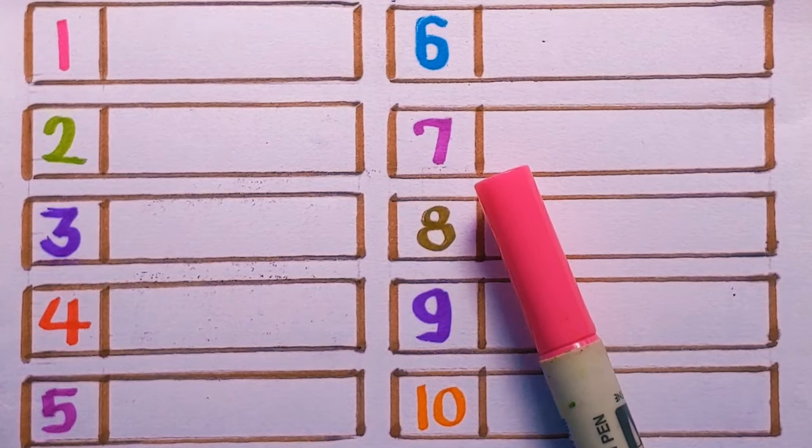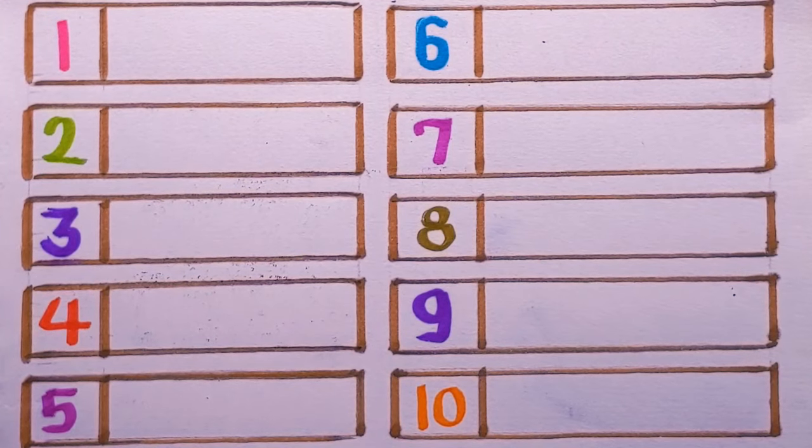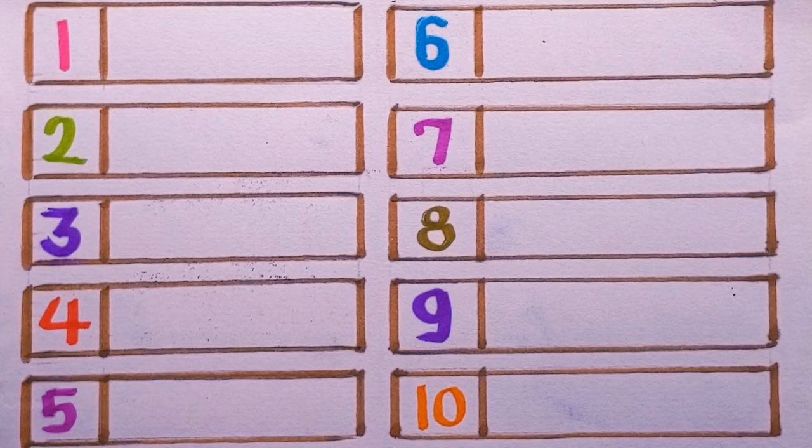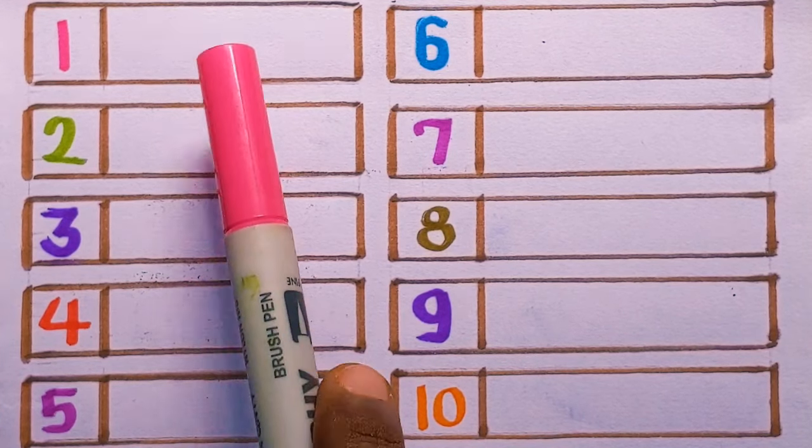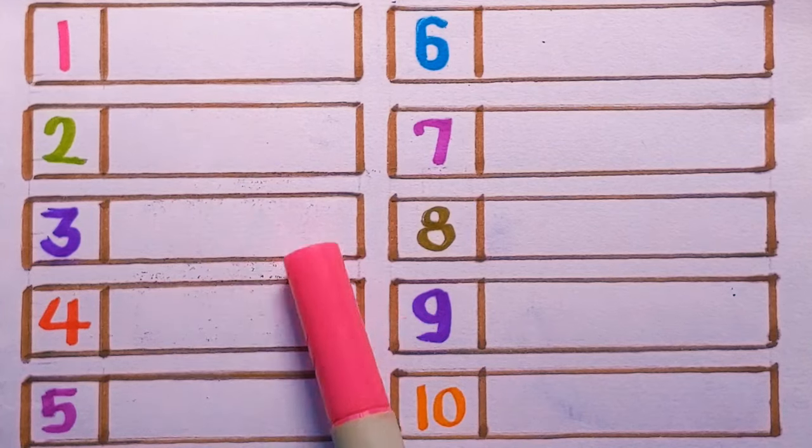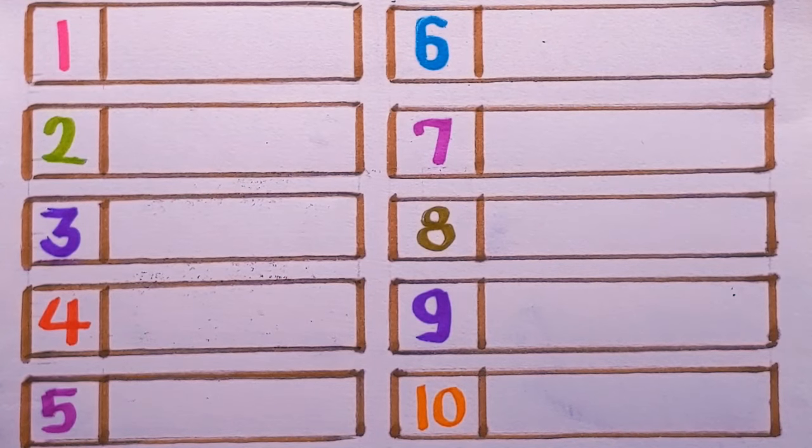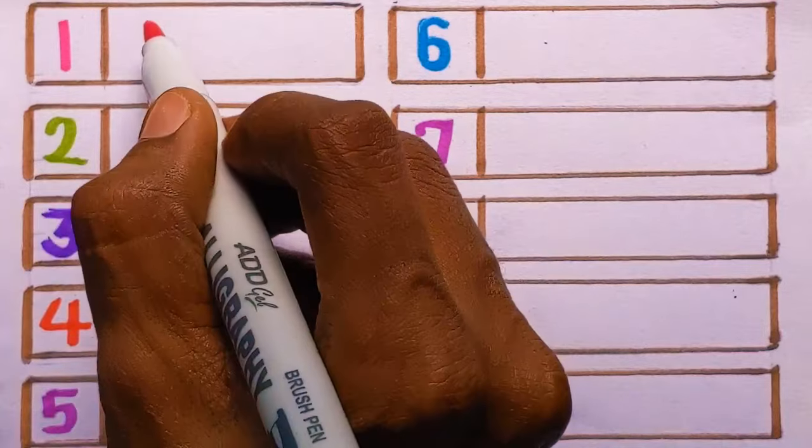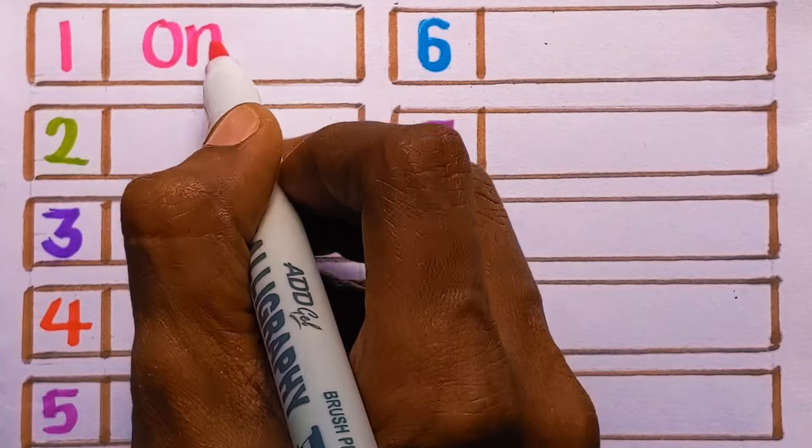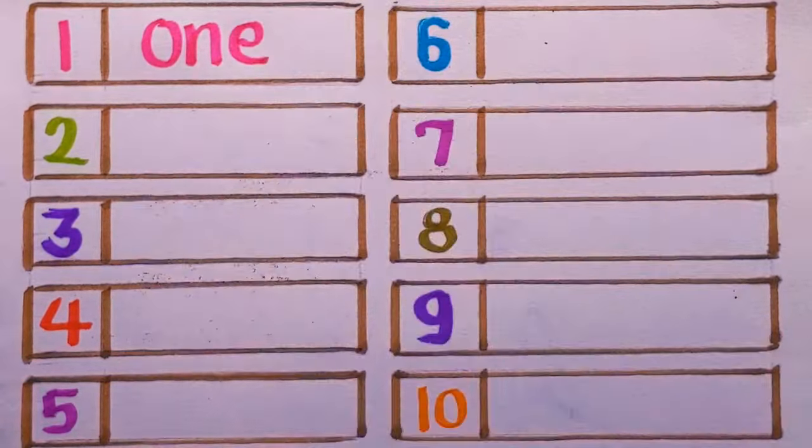Hello children, welcome back to my channel Learn with Aviya. In today's class we are going to learn word form of numbers one through ten. So let's get started. At first, one: O-N-E, one.